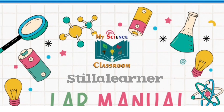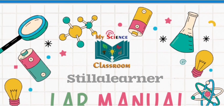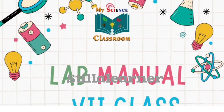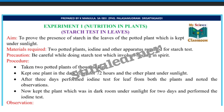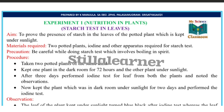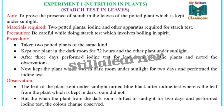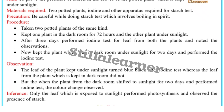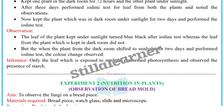This is the project work of seventh class, subject science. Let's see the experiments. Experiment number one is nutrition in plants: starch test in leaves. This is how you have to write down your project work.